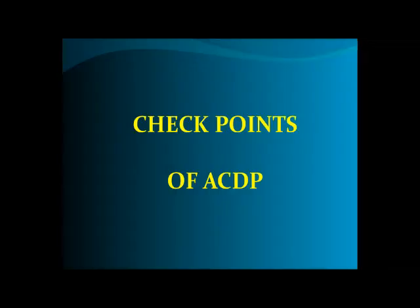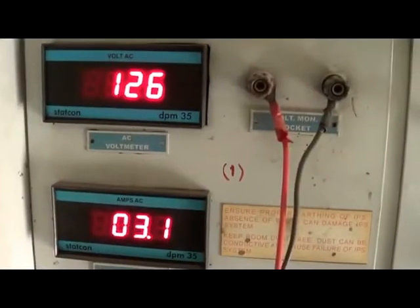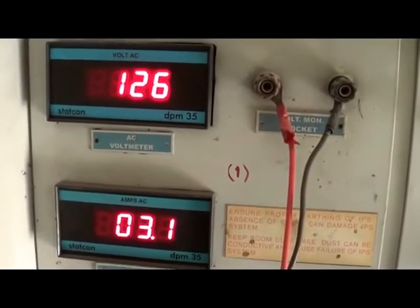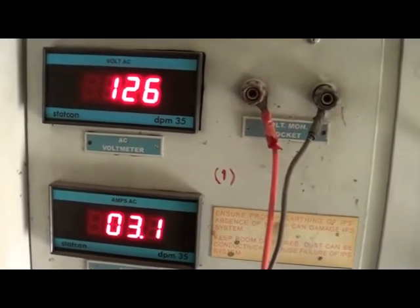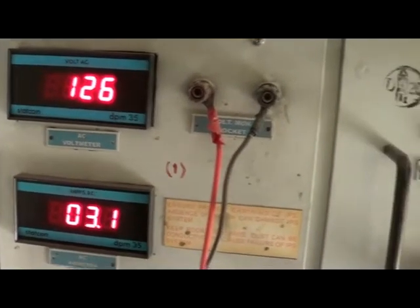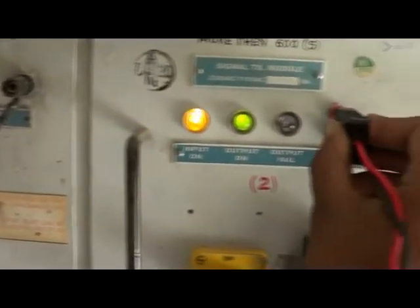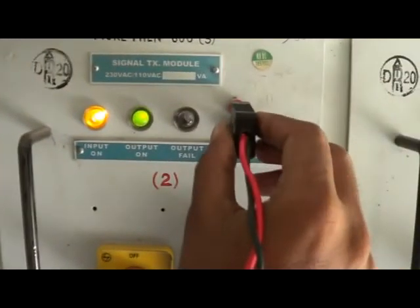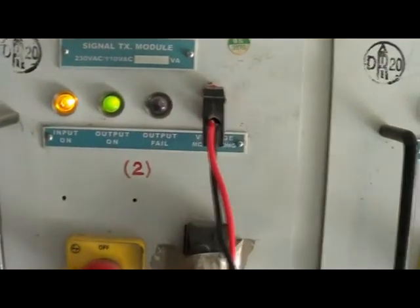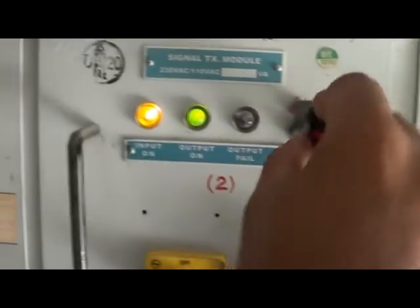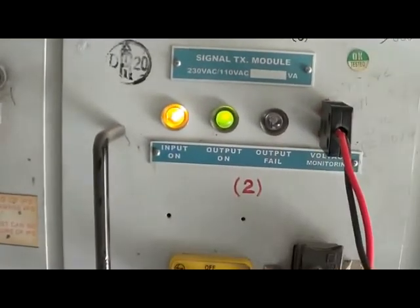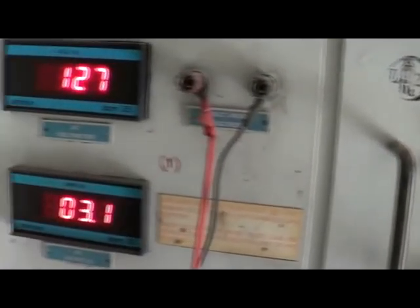Check points of ACDP: Check the output voltage and current of inverters, AVRs, and step-down transformers using the digital voltmeter provided on the ACDP. Periodicity: once in 15 days.